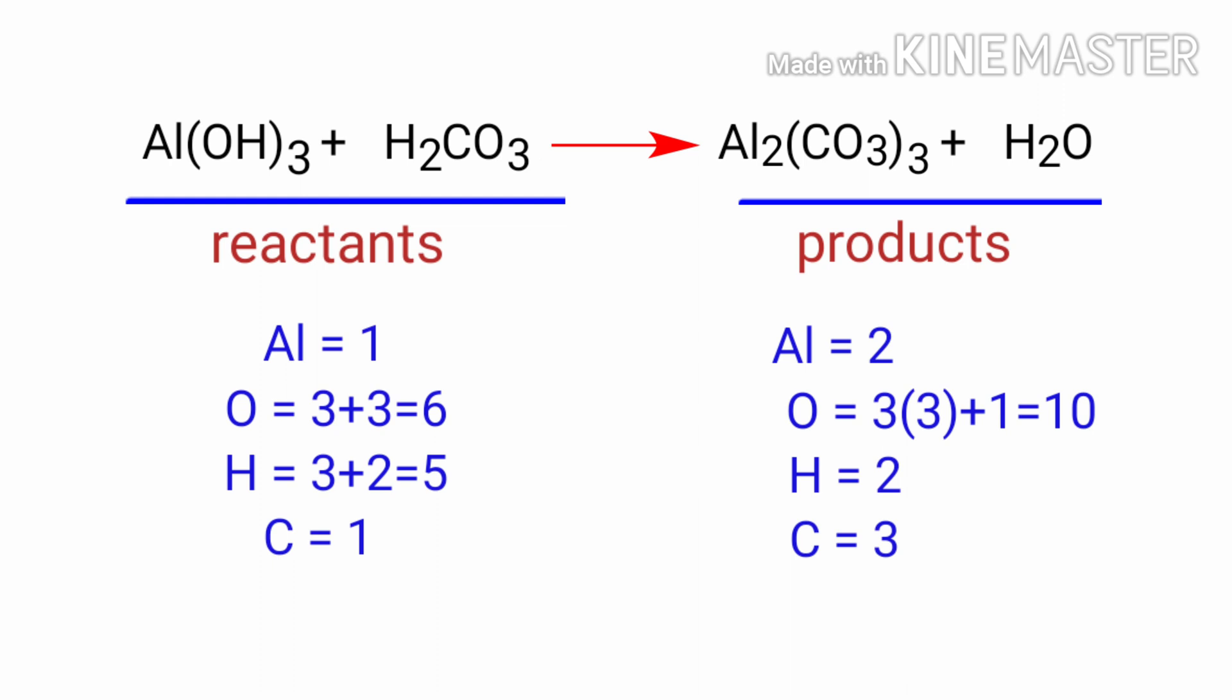In the reactants side, there are one aluminum atom, six oxygen atoms, five hydrogen atoms, and one carbon atom. Under the products side, there are two aluminum atoms, ten oxygen atoms, two hydrogen atoms, and three carbon atoms. The number of atoms are not balanced on both sides.